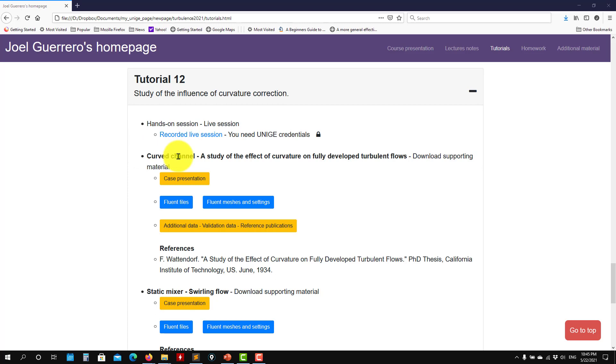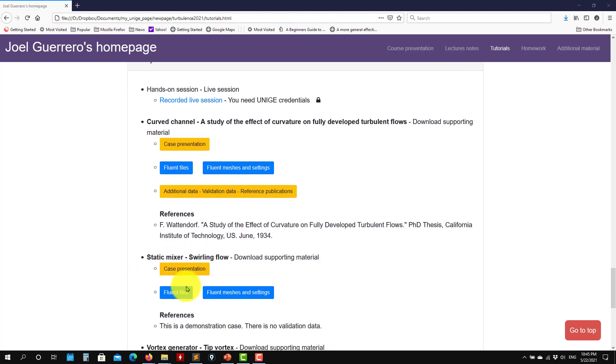So in the previous one, curve channel, we focused a little bit on the geometry influence. This one is the flow, the influence of the rotation of the flow on your solution. We're going to work it out in this case. As you saw, you have the files there, and let's see what we have.